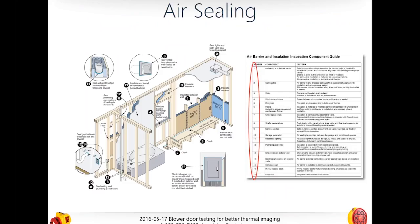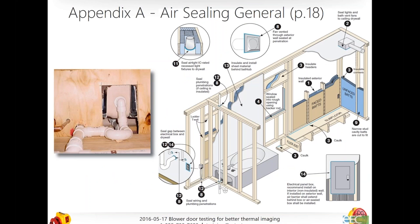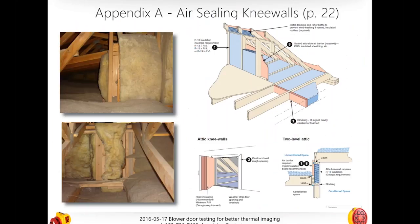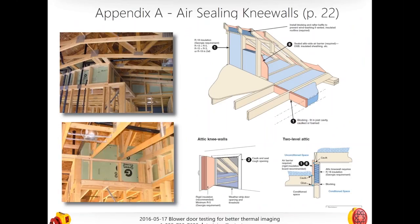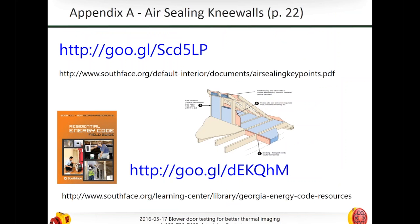Here are images taken from South Face in Atlanta, Georgia, part of their air sealing guide. These are really important for people to understand before looking at thermographic images — they need to know where the studs are, where the batts are, and where the potential bypasses are so they can interpret their images. Here's page 18 with great information about knee walls. The point is: do a walkthrough, know what you're looking at before running your thermographic tests.